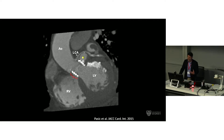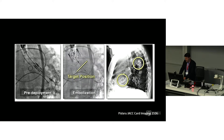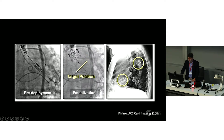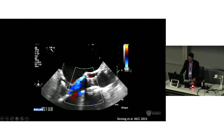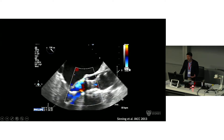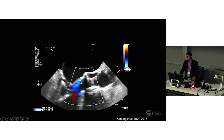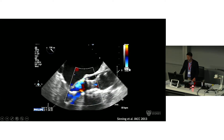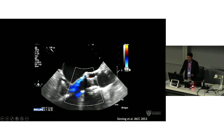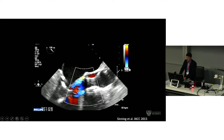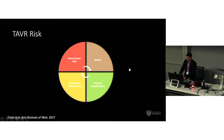We can have annular rupture or pseudoaneurysm formation. We really don't want to have a postoperative X-ray that looks like that, although it may not be a total disaster. And as was mentioned, paravalvular leak is very significant in terms of long-term prognosis. So imaging is key to reducing those risks.